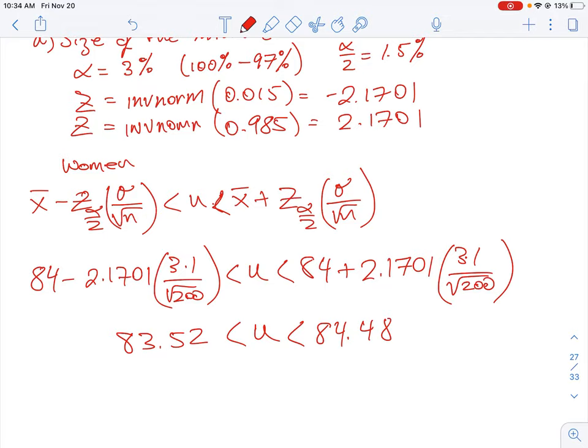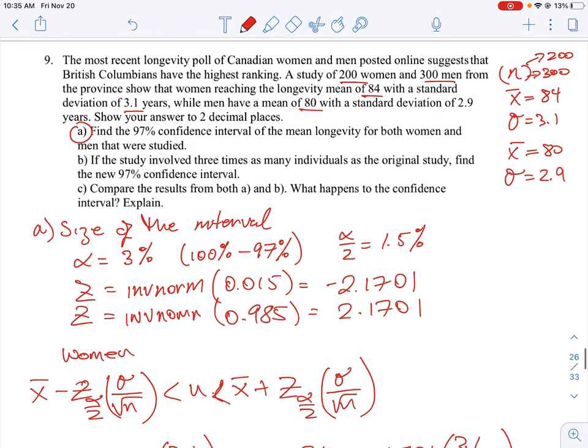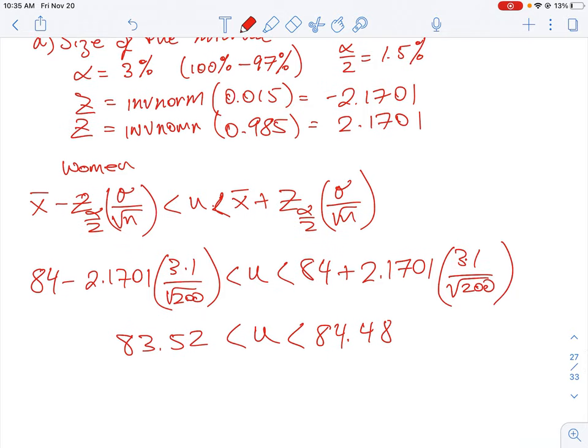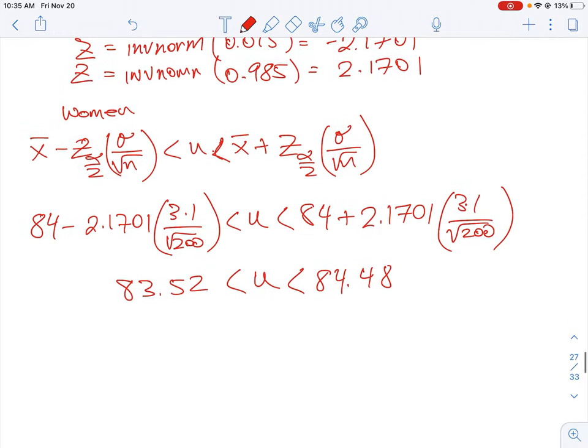And then we can do the same for the men calculation. You're just going to have a different standard deviation, which is 2.9. The mean is slightly lower, which is 80, and the sample size I think was different here. It was 300. So you can do the same calculation for that.